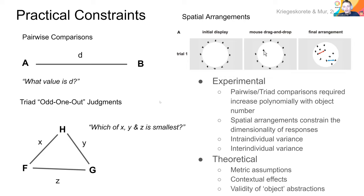One benefit of the triad paradigm is that you get contextual effects — you can see how different contexts change the similarity judgments, which you don't get with pairwise comparisons. This isn't an exhaustive view of all the different ways you can do similarity judgments, but it's to note that there are actually a lot of different ways to ask participants how similar things are, with quite a few different theoretical and empirical difficulties.